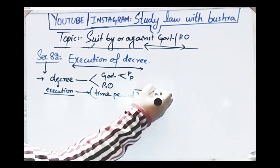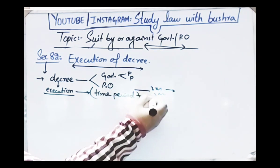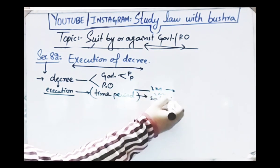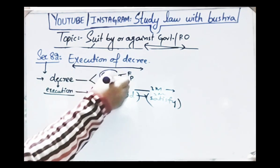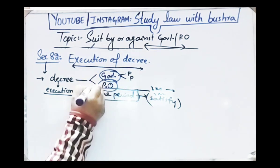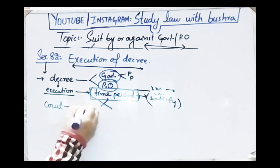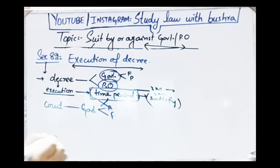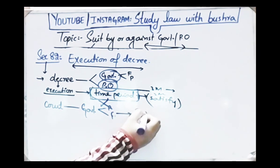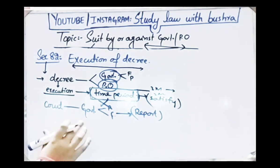Subsection 1 says: where a decree is passed against the government — whether federal or provincial — or against a public officer, the procedure for execution of that decree is that a time period will be mentioned in the decree by the court within which the government or public officer must satisfy the decree — say 3 months, 2 months, or 4 months, whatever time the court finds appropriate. If the government or public officer does not satisfy the decree within such prescribed time period, then the court will report the matter to the concerned government and ask it to issue orders to satisfy the decree.